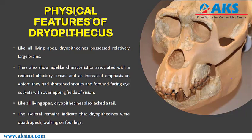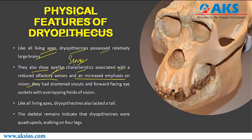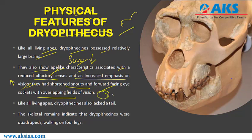Like all living apes, Dryopithecus possessed relatively large brains. They show ape-like characteristics associated with reduced olfactory senses and an increased emphasis on vision — specifically binocular vision, which increased over time. They had shorter snouts, but relative prognathism was still found in this species, along with forward-facing eye sockets with overlapping fields of vision. Supraorbital ridges are still prominent in Dryopithecus.